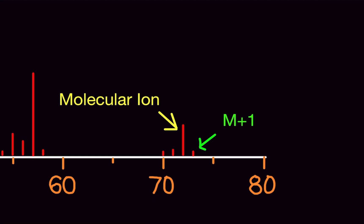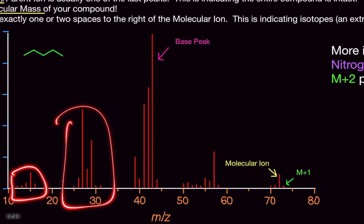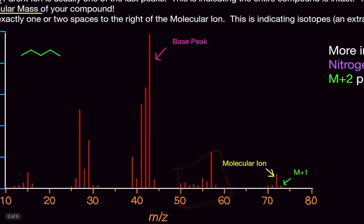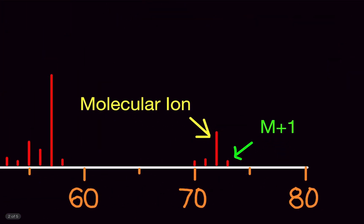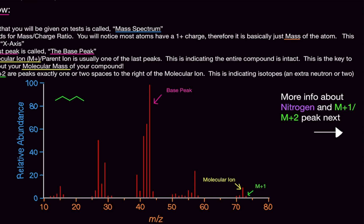Here's the trick for identifying the molecular ion, because a lot of people struggle with it. When you look at a mass spec graph you'll always notice groupings of bars. What you look at is the last group of bars on the graph — the largest, tallest bar of that last group is the molecular ion. It is not necessarily always going to be the base peak, though sometimes the molecular ion can be the base peak.